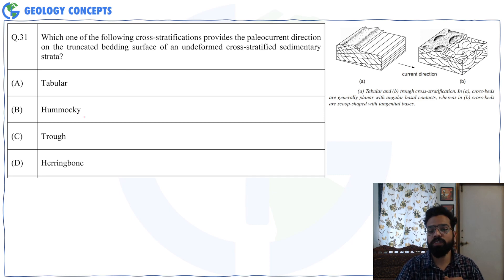And the hammocky cross stratification forms in a very, very high energy environment. So even there, you won't get a particular direction. You will get all sorts of directions in hammocky. So the correct answer over here would be trough.